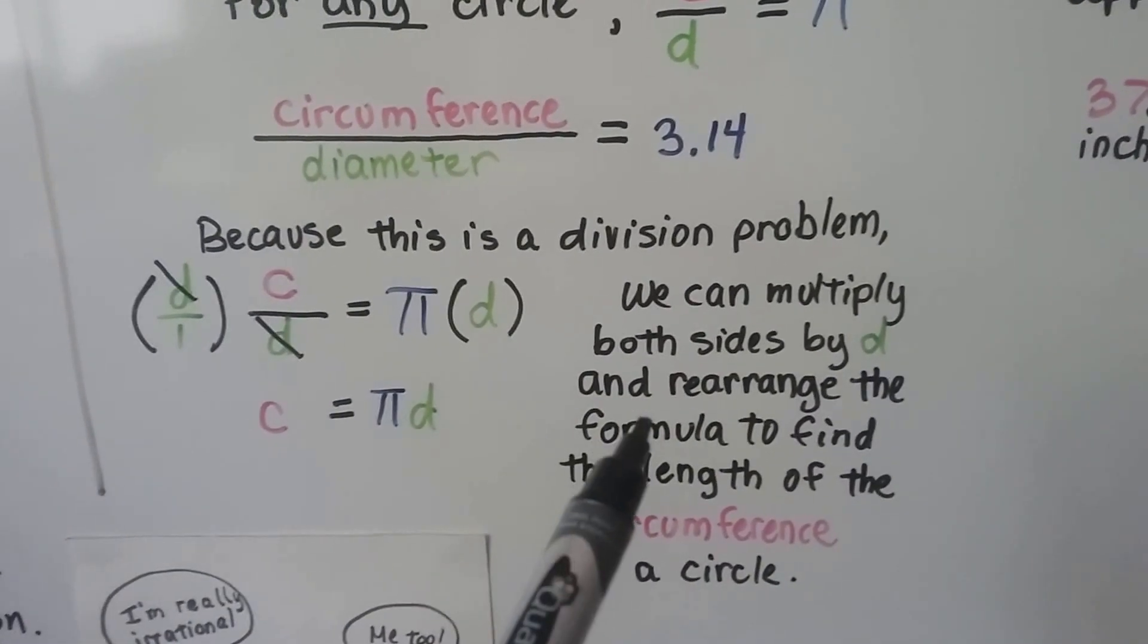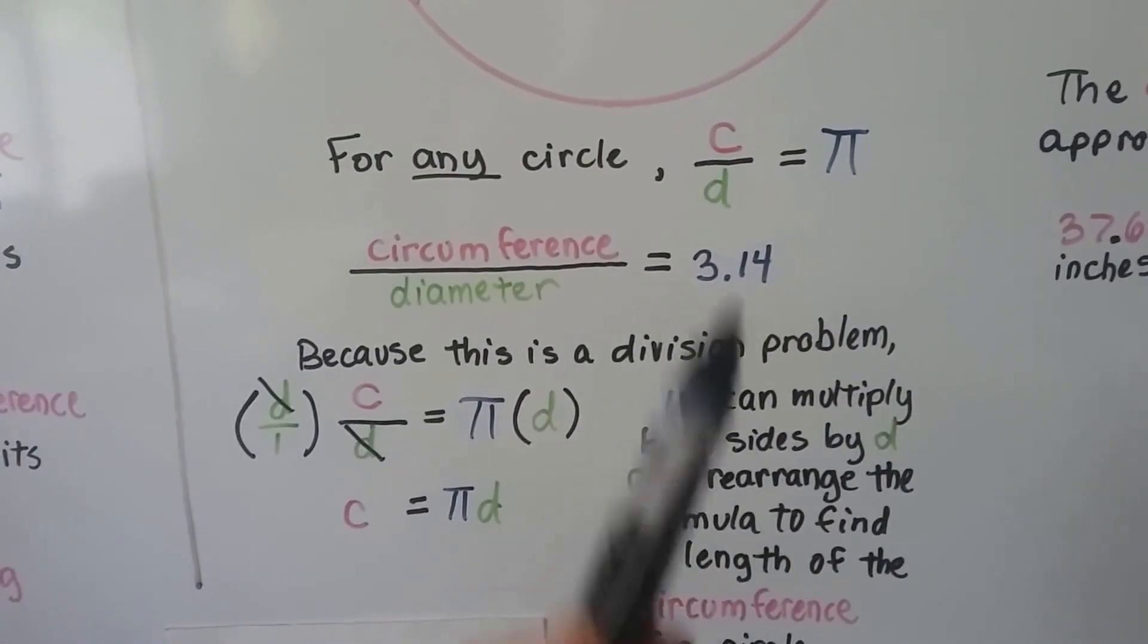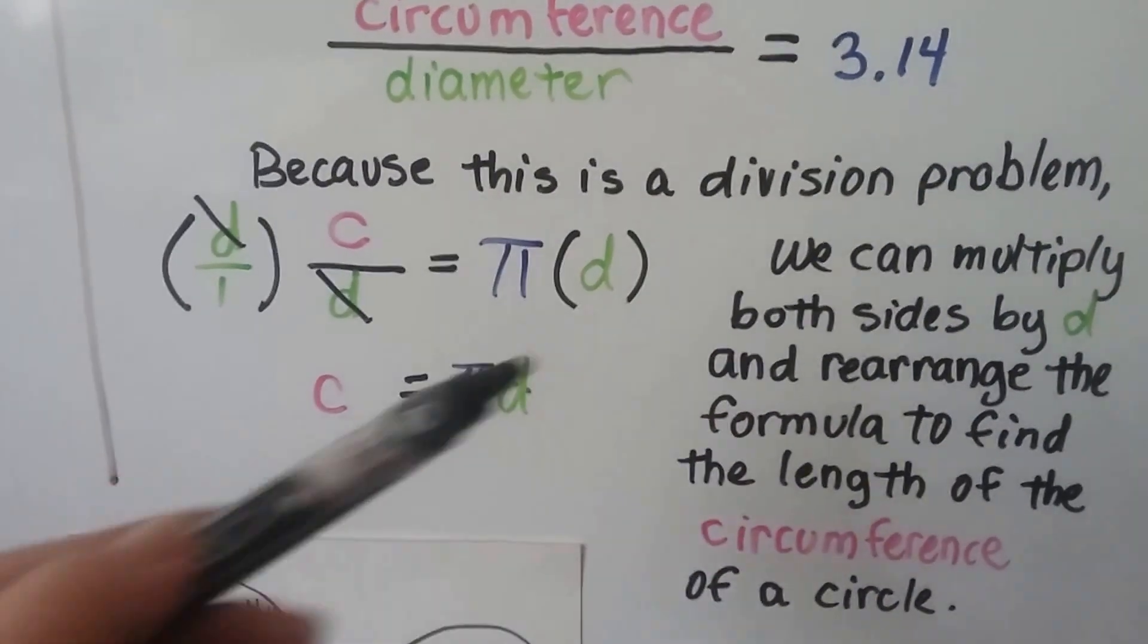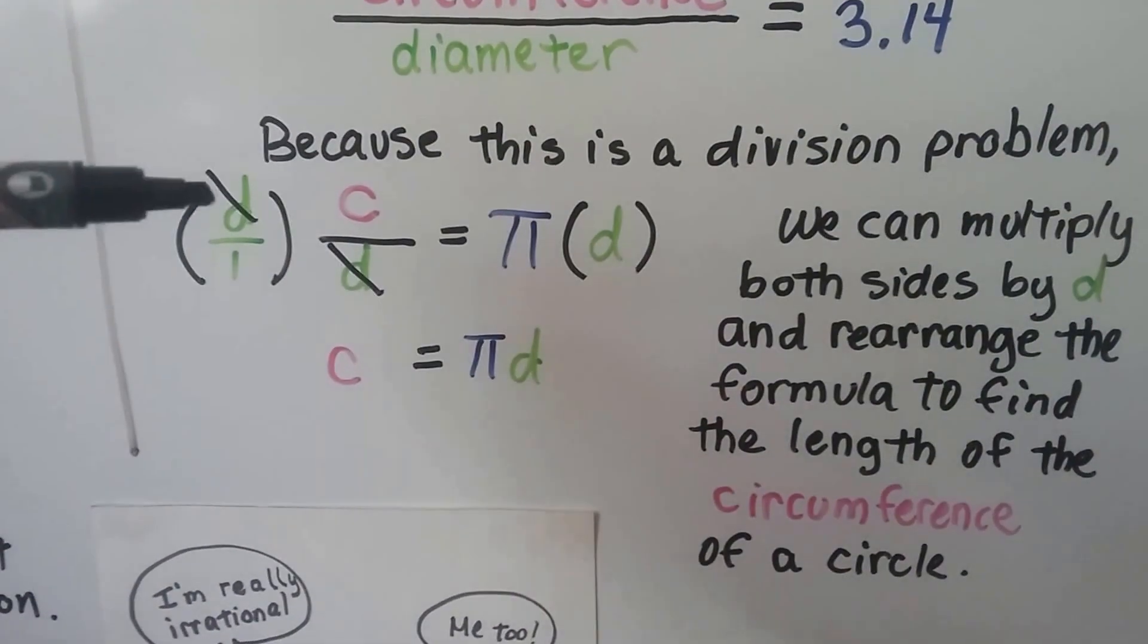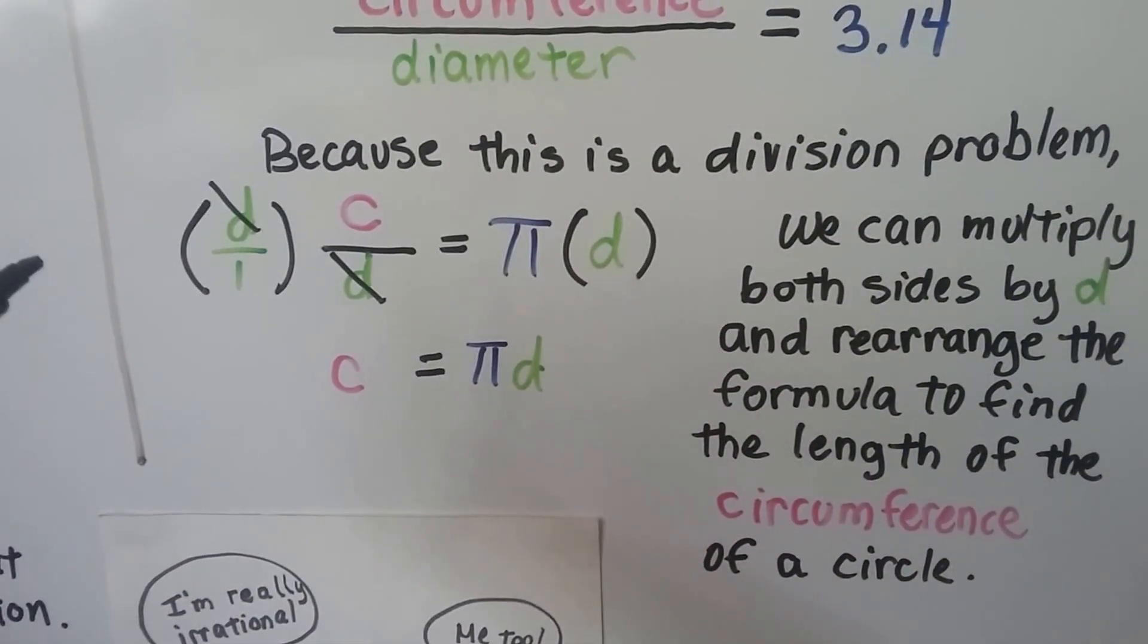So we can rearrange this formula so instead of having it equal pi, we can make it equal c. We multiply both sides of the equal sign by the d. And on this side, if we write d over 1, that's the same thing as d.